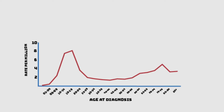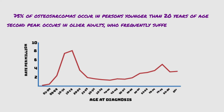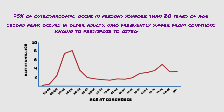This image shows the age distribution of osteosarcoma. Osteosarcoma has a bimodal age distribution — 75% of osteosarcomas occur in persons younger than 20 years of age. The smaller second peak occurs in older adults who frequently suffer from conditions known to predispose to osteosarcoma.